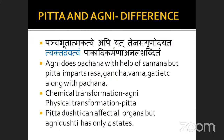Now let's see how Pitta and Agni differ. Agni does Pachana with the help of Samana Vayu alone, whereas the functions of Pitta include imparting Rasa, Gandha, Varna and Gati along with Pachana. In action, the chemical transformation — the conversion of Anna into Sara and Kitta — is by Agni, whereas the physical transformation — the conversion of the Sara part into various Rasa, Gandha and Varna — is done by Pitta. Furthermore, Pitta Dushti can affect any organ anywhere, but Agni Dushti has only four states: Samavastha and the three Vigridhavastha — Manda, Teekshna and Vishama. These are the key differences between Pitta and Agni, but the main concept is that the Ushna or Ushma Guna imparted in our body is Agni.